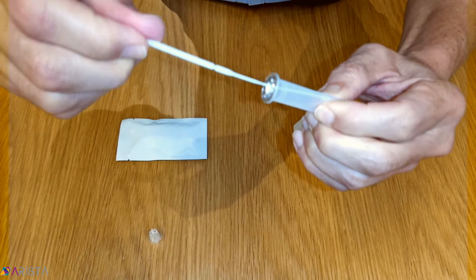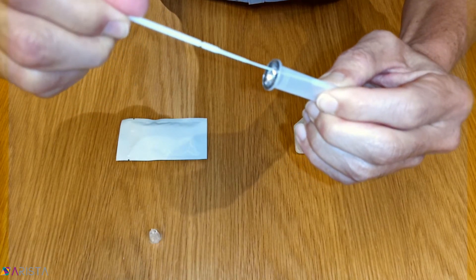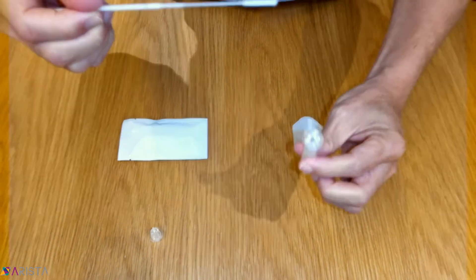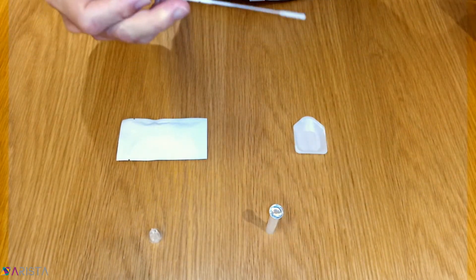Remove the swab while continuing to squeeze the sides of the tube so as to extract all the liquid from the sponge tip. Then safely dispose of the swab.